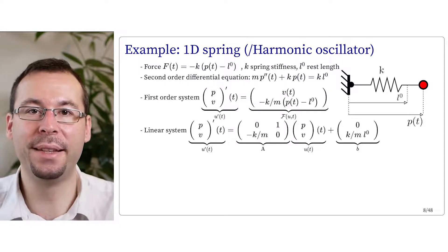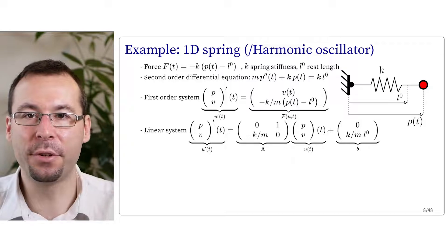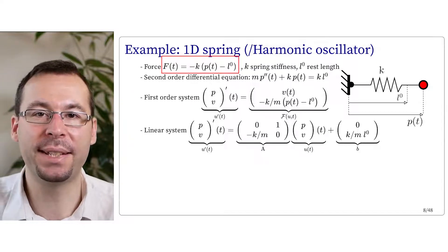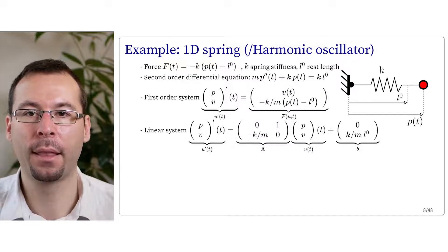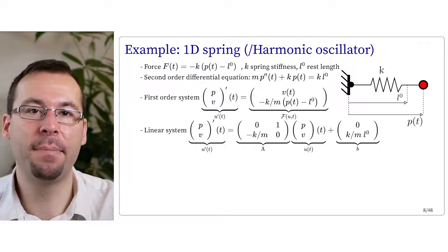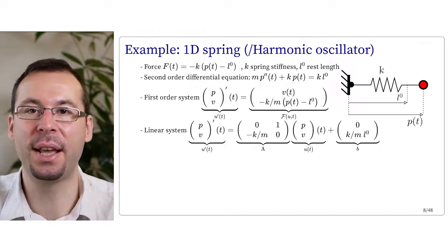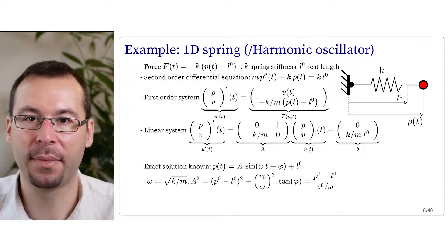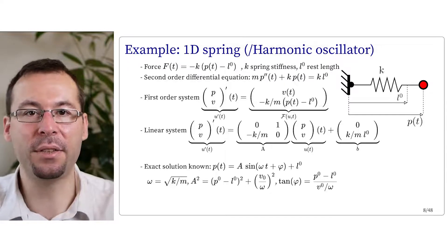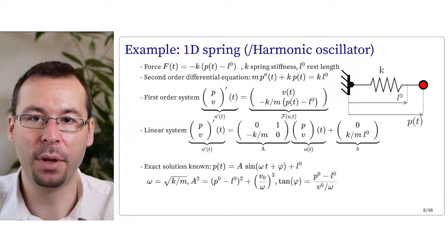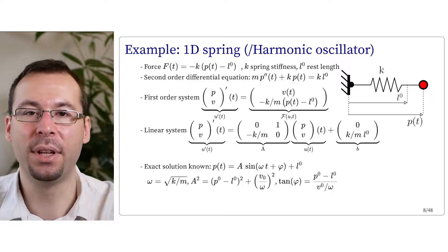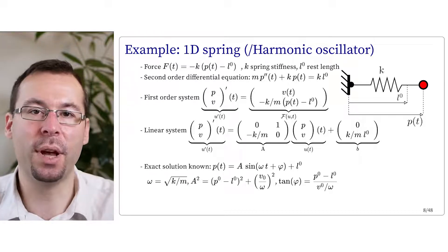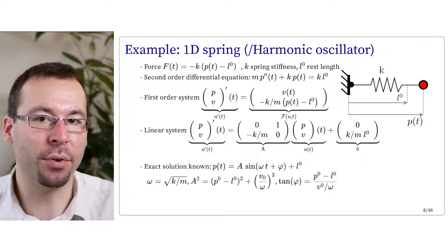The second example is the pure 1D spring, also called the harmonic oscillator. The spring exerts a force f of t equals minus k — the stiffness coefficient — times (p of t minus L₀), where L₀ is the rest length. This gives the second-order equation: m times p double-prime of t plus k p of t equals k times L₀. We know the exact solution is a permanent oscillation around the rest length L₀: p of t equals A sin(ωt + φ) + L₀, where ω equals the square root of k divided by m.